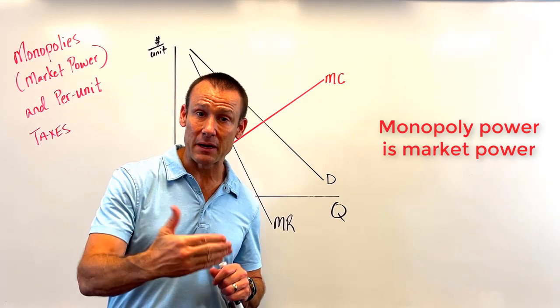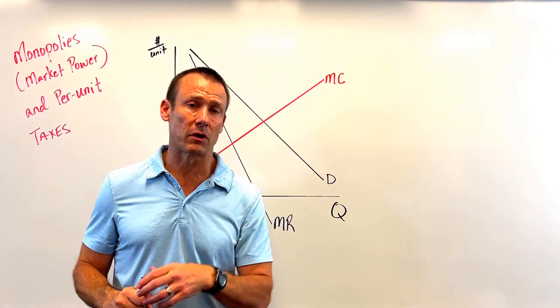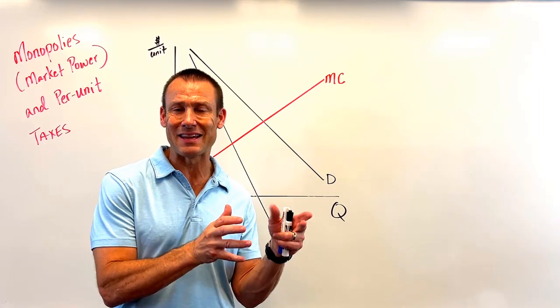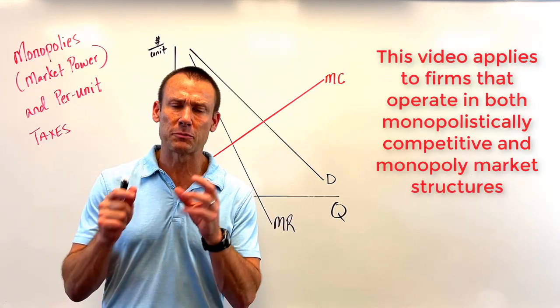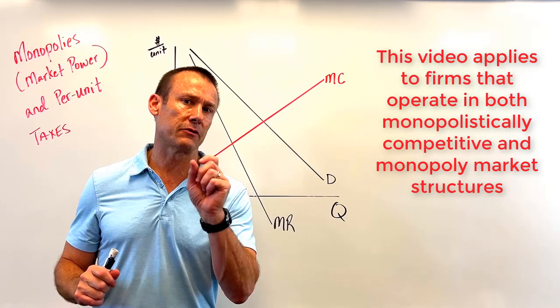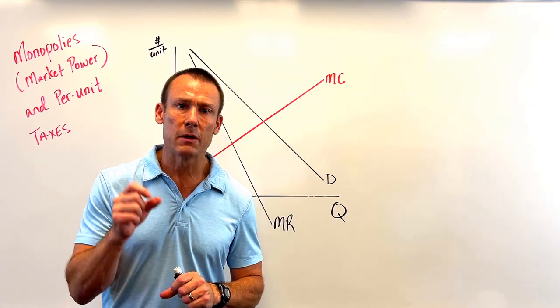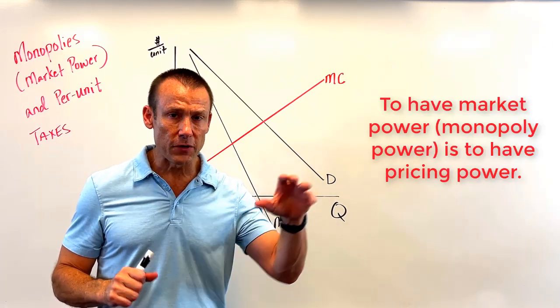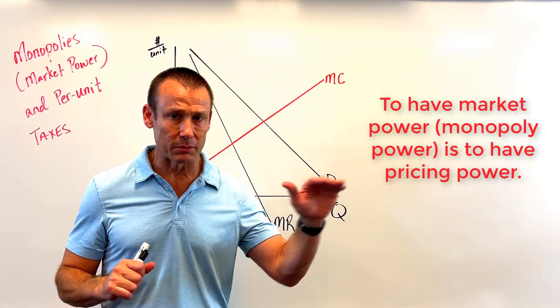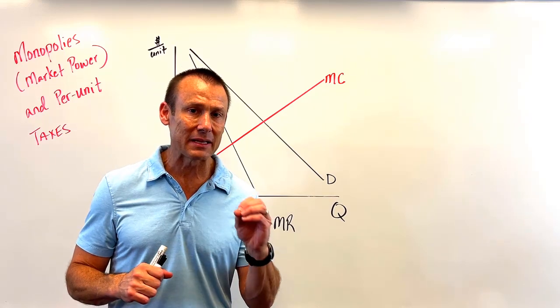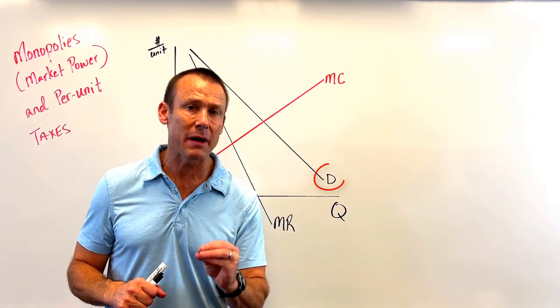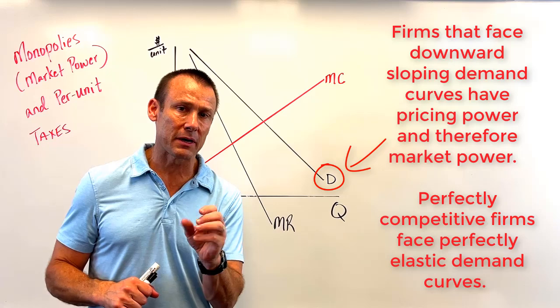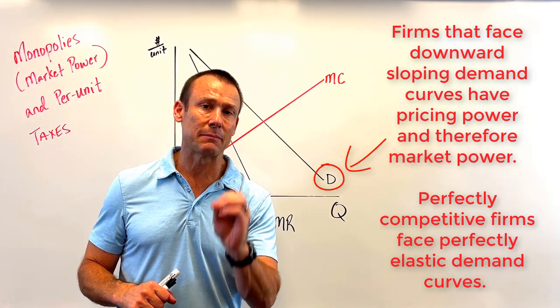Monopolistically competitive firms also have market power. So pretty much anything I'm saying here applies to monopolies, but really any firm that has market power. And if you have market power, that means you have pricing power. Your demand curve that you face as a firm is not completely elastic. There's some inelasticity which gives you pricing power.